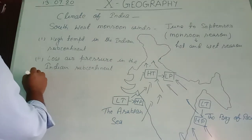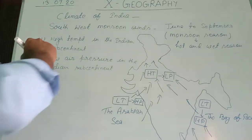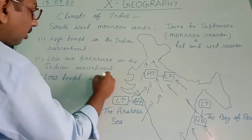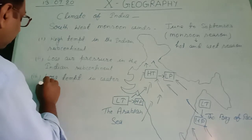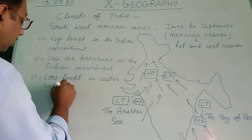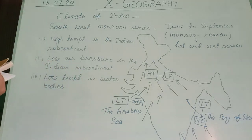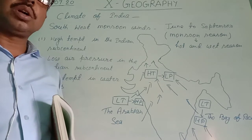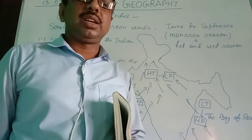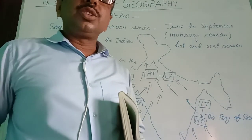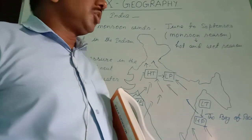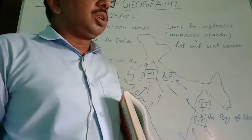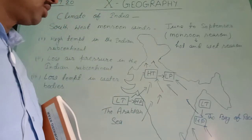Feature three: at the same time, there is low temperature in the water bodies — the Bay of Bengal and the Arabian Sea. Why is there a temperature difference in the same season? Because land heats up quickly — the rate of heating of land is very fast — but the rate of heating of water is very slow. Therefore, the ocean and seas take time to heat up, creating a temperature difference between the Indian subcontinent and the water bodies.